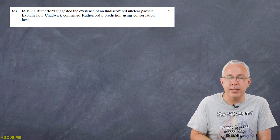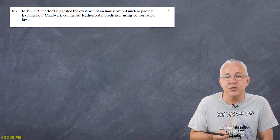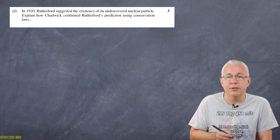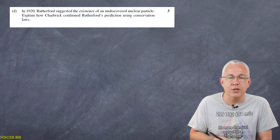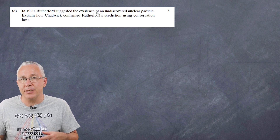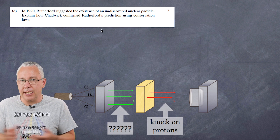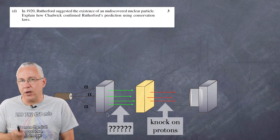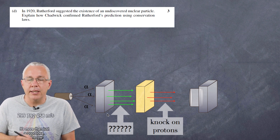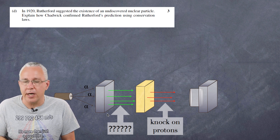Question D in 2009 is a three-mark question: 'In 1920, Rutherford suggested the existence of an undiscovered nuclear particle. Explain how Chadwick confirmed Rutherford's prediction using the conservation laws.' To answer this, I'm going to draw on a presentation I did on Chadwick and paste in the experimental setup. Basically we have an alpha source — traditionally polonium — and Chadwick fired this at certain materials.